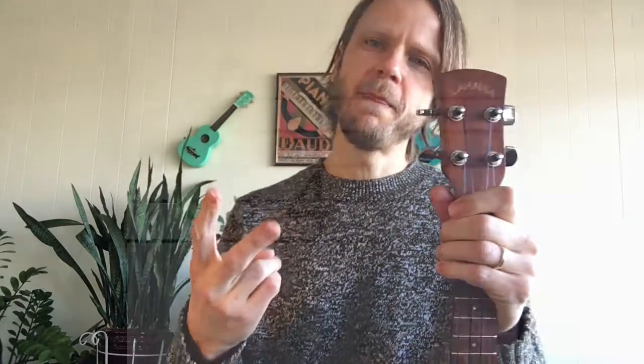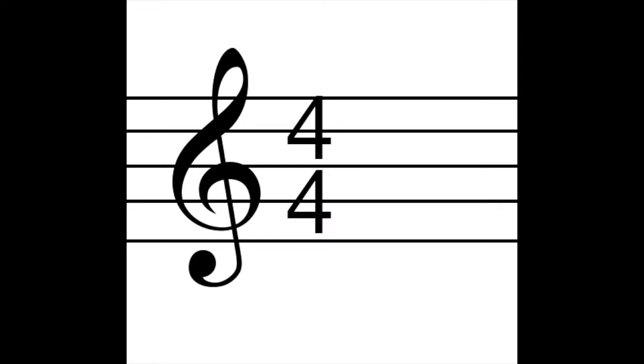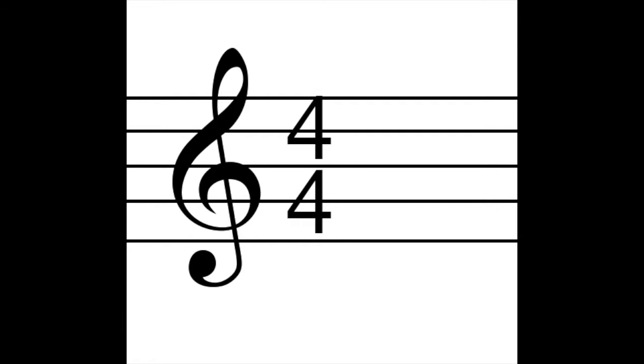A time signature is written with two numbers right next to the treble clef. The top number tells us how many counts or beats are in the measure. A measure is marked off by bar lines — the vertical lines you see in music that create little boxes. Each box has to have a certain number of beats, which is what the time signature tells us. In four-four time, the top number is four beats per measure.